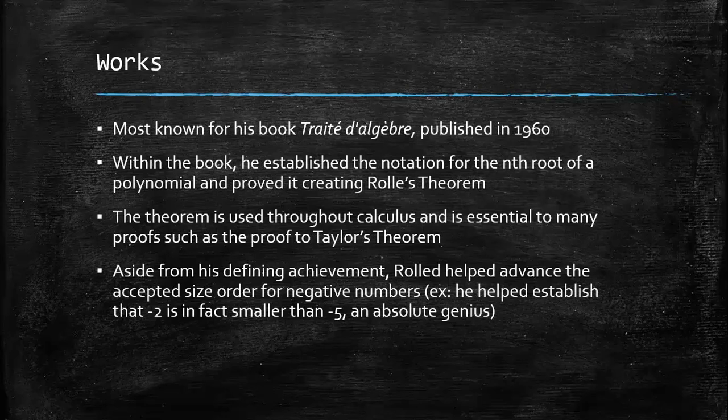Aside from Rolle's theorem, his most known accomplishment, Rolle also helped advance the currently accepted size order for negative numbers. Descartes, for example, another mathematician at the time, viewed negative 2 as a smaller value than negative 5. Which is obvious to us, but it makes you wonder about back then, right?